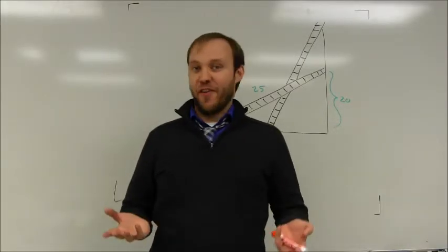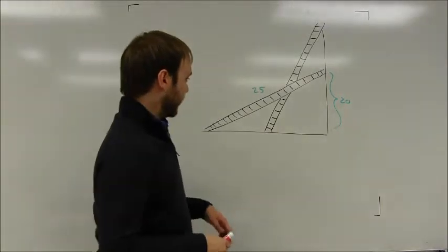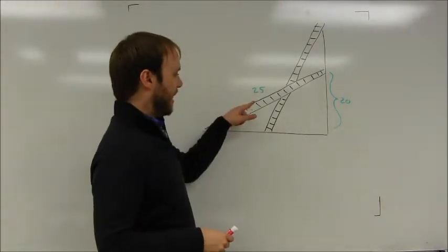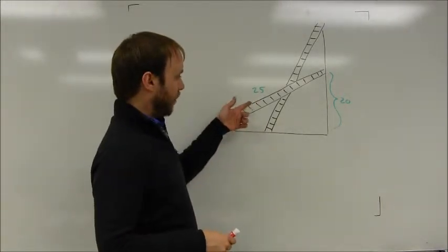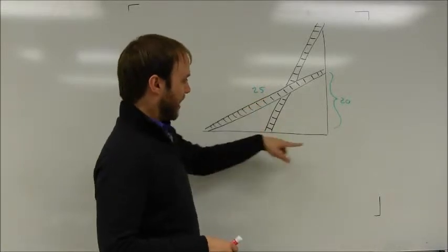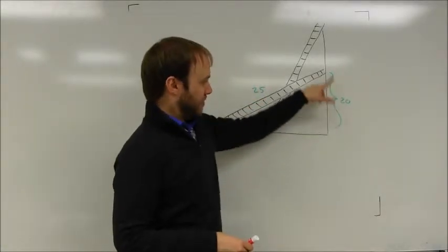In this problem I'm told that I have a ladder, and when the ladder leans against the wall, it's a 25-foot ladder, when it leans against the wall in this position, it reaches the wall 20 feet up.